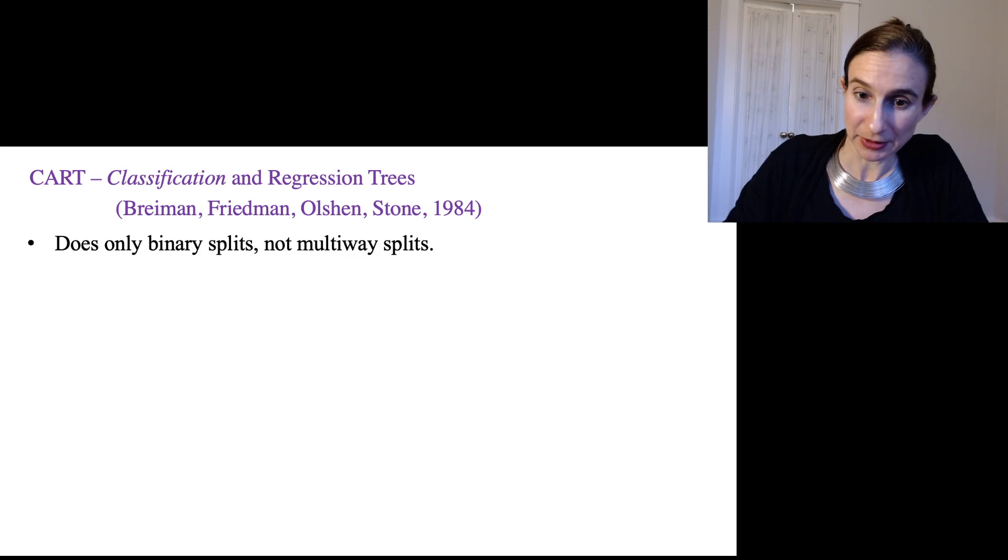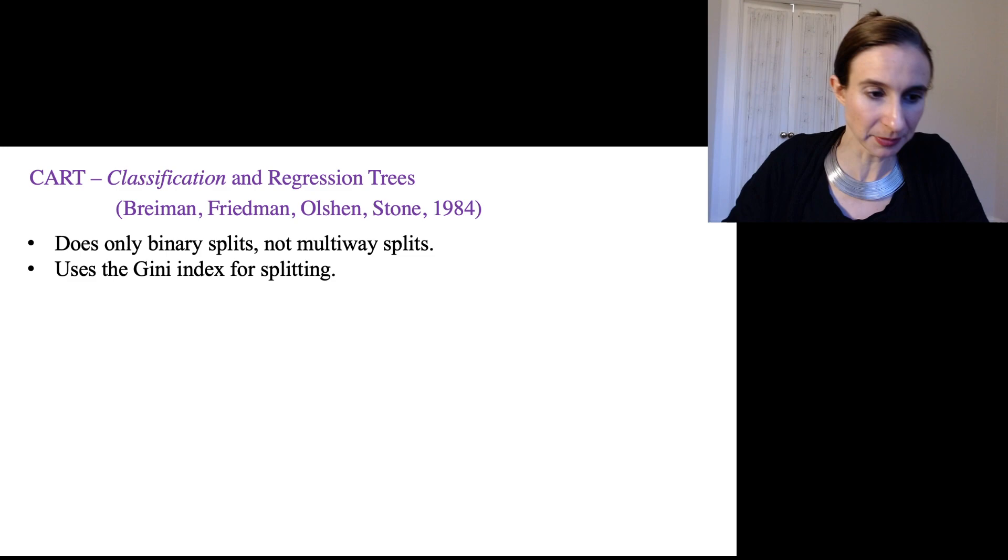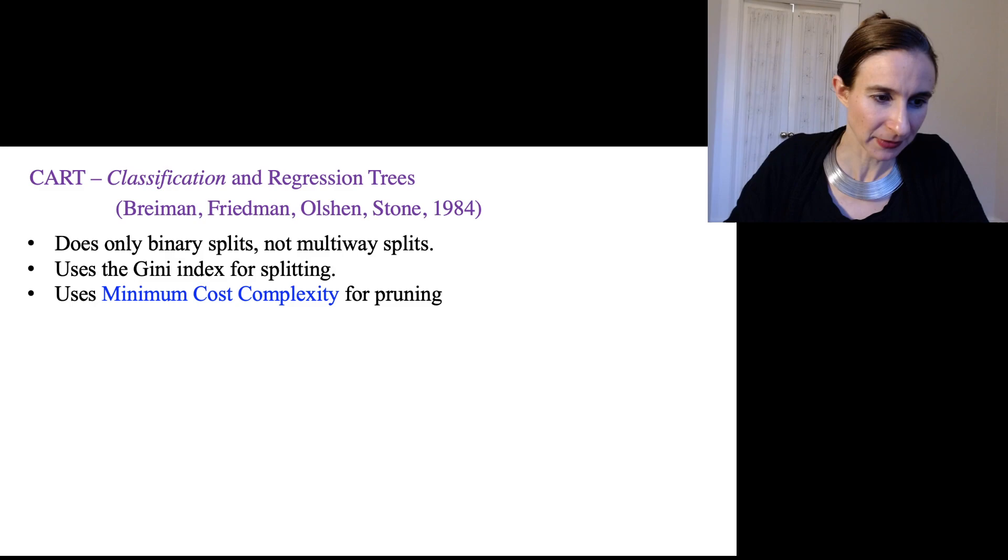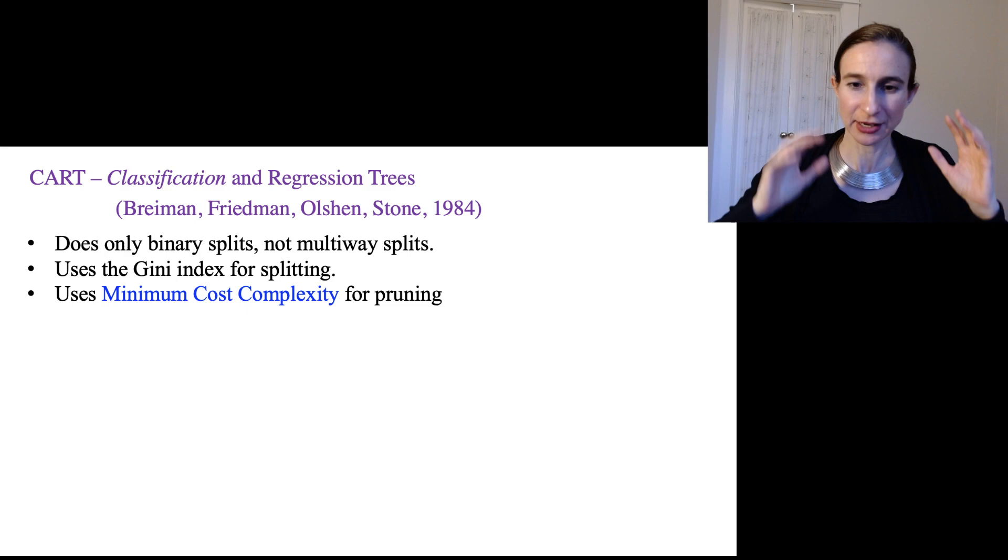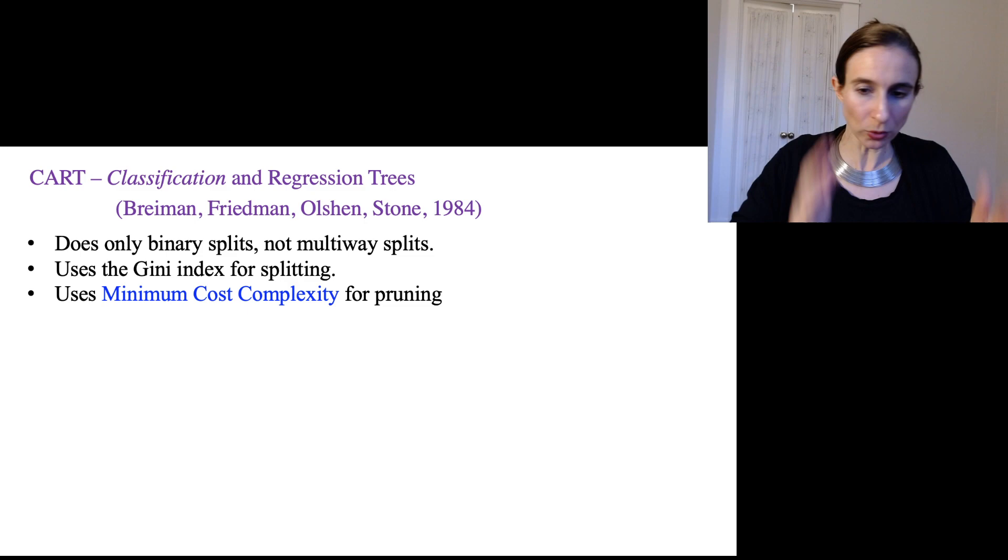Anyway, so CART, it does only binary splits. It doesn't do multi-way splits, which makes the splitting criteria simpler. It uses the Gini index for splitting, which I introduced in the last part of the lecture. But then the best part of this whole thing, the best part of CART, C4.5, in my opinion, is that minimum cost complexity criteria for pruning. Because this is the only thing in all of this stuff that actually makes sense to me.